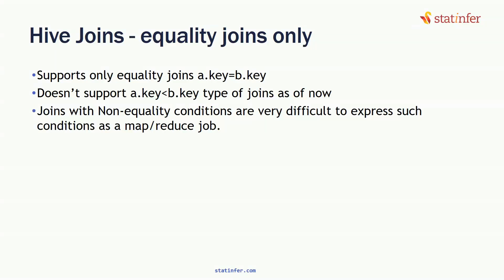We already saw joins in Hive. We need to be careful here. Hive cannot do everything that is possible in SQL. SQL is a much more matured tool and language. Basically, Hive is just an alternative to avoid MapReduce programming. We take some standard queries and Hive will automatically convert them into MapReduce. Within joins, not every join is possible — only equality joins where the key will be a.key equal to b.key. Hive doesn't support a.key less than b.key type of joins, because non-equality joins are very difficult to convert into MapReduce.